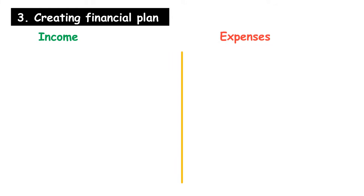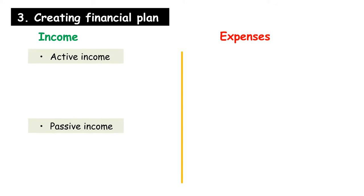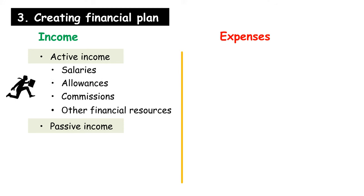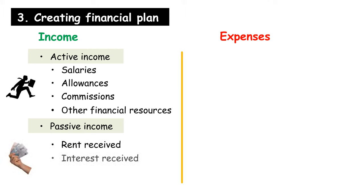Creating a financial plan helps us monitor our cash flow. There are two important components: sources of income and expenses. Income consists of active income and passive income. Active income is the main income, such as salaries, allowances, commissions, and other financial resources. Passive income consists of rent received, interest received, dividends, and other investments. Both of these incomes are cash inflows.